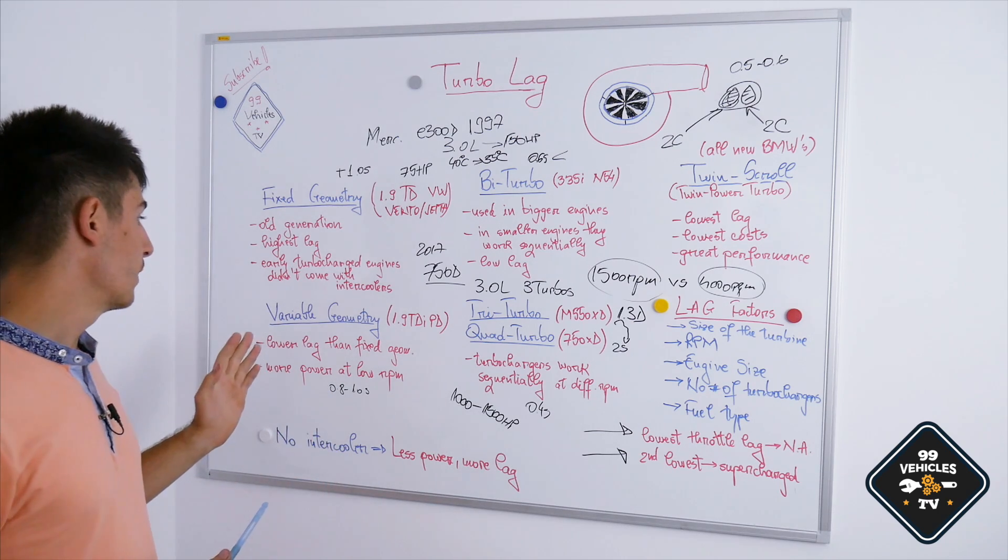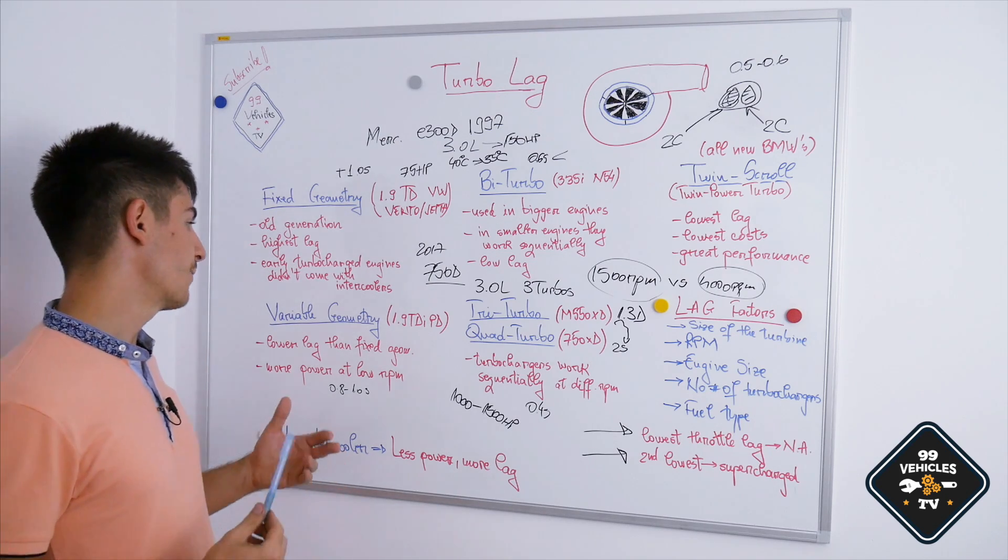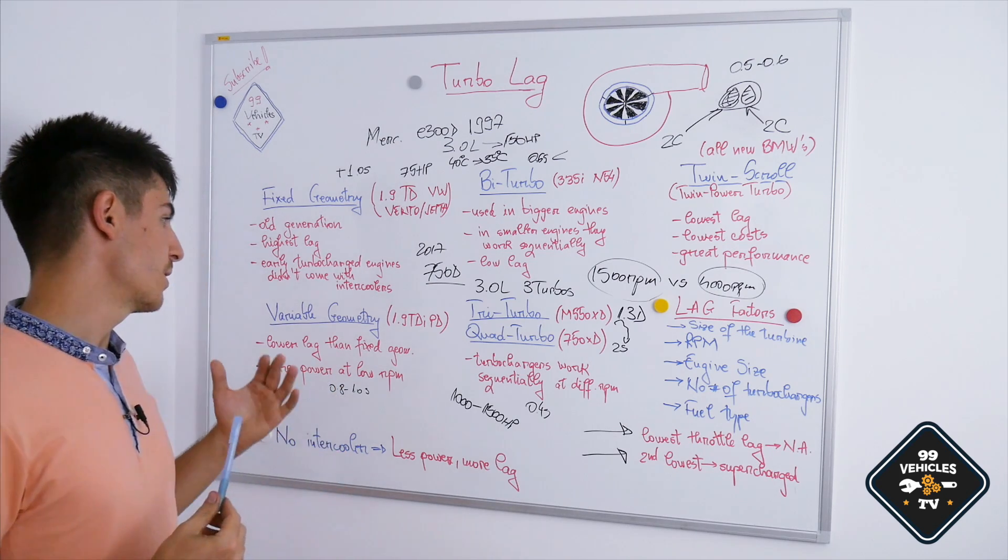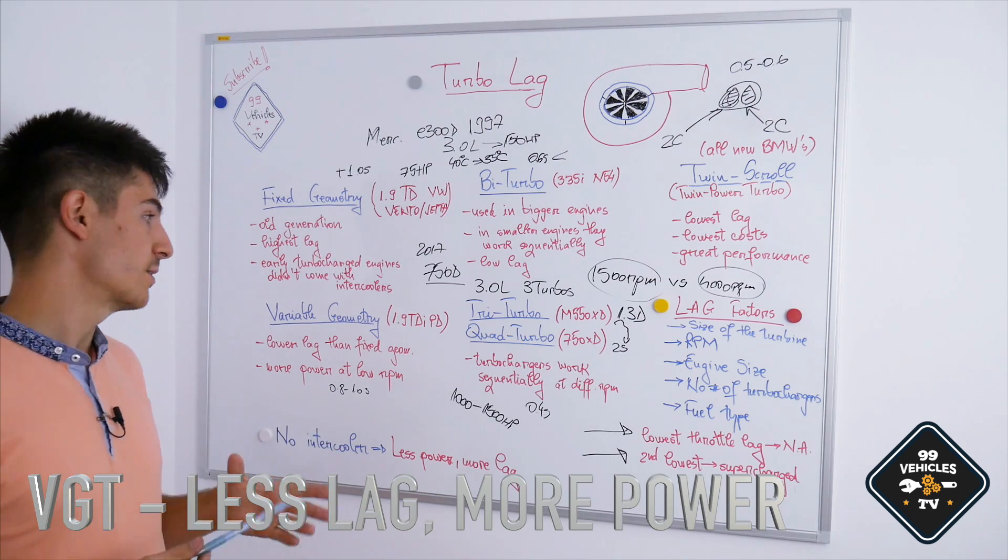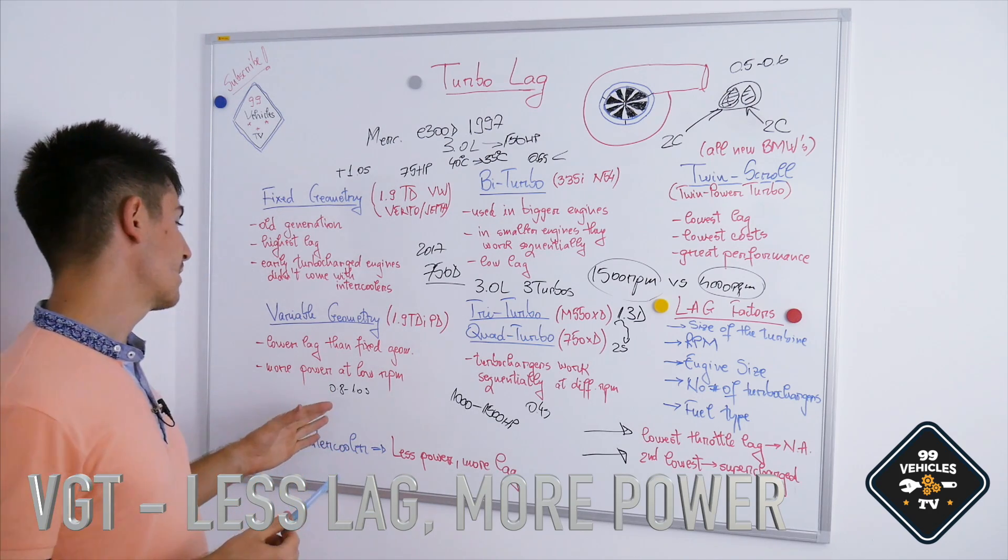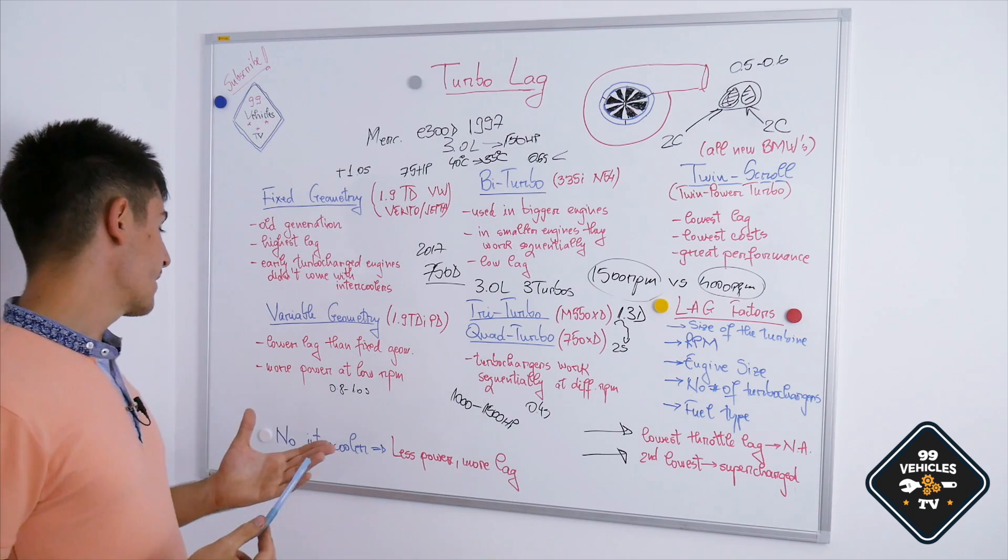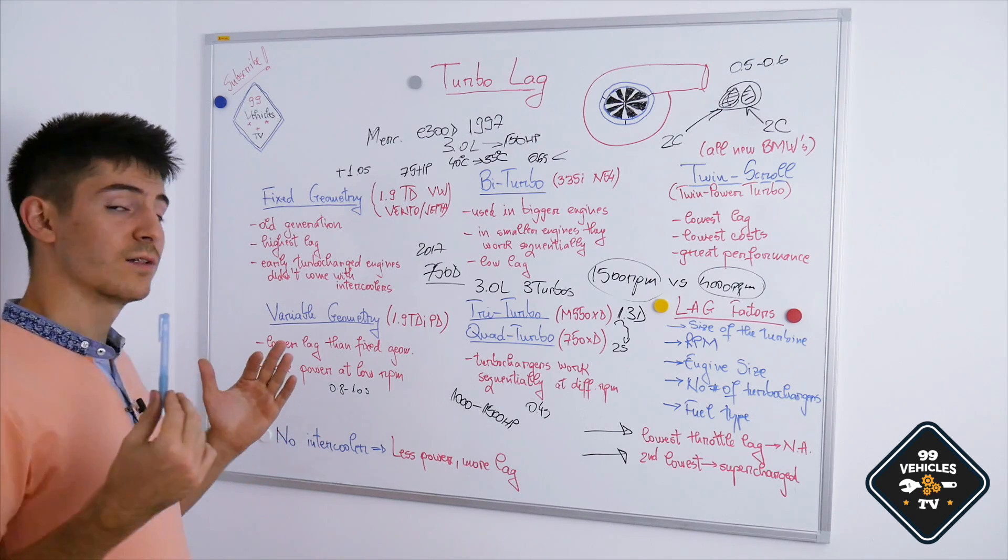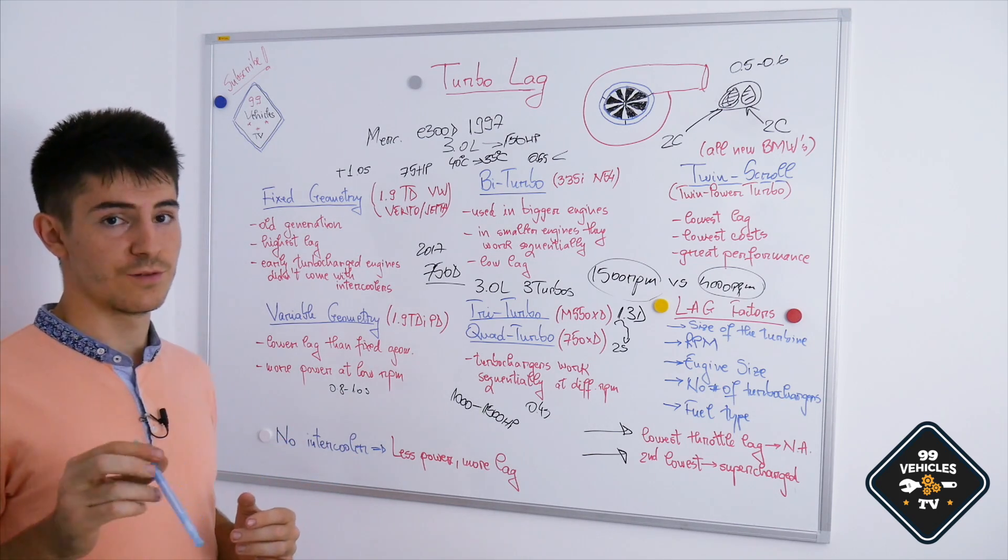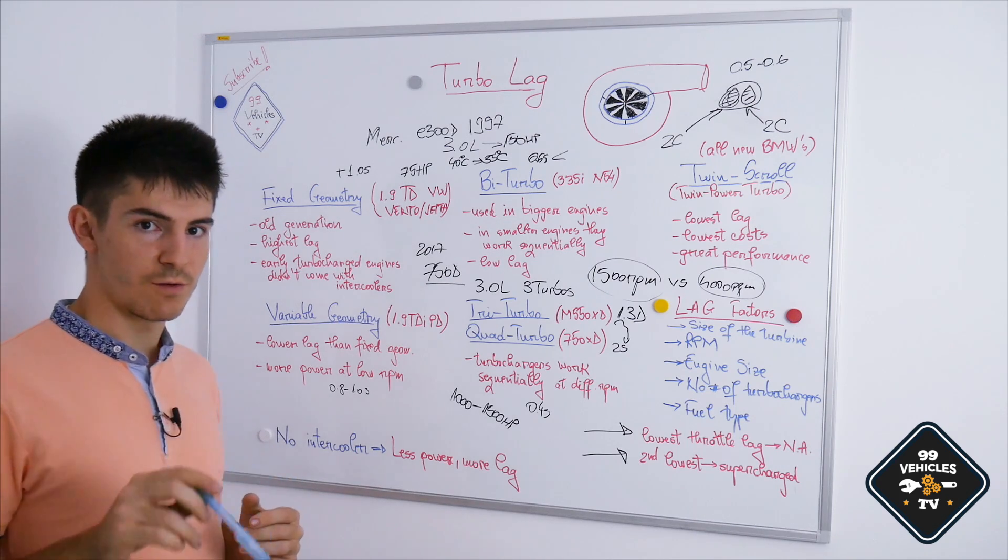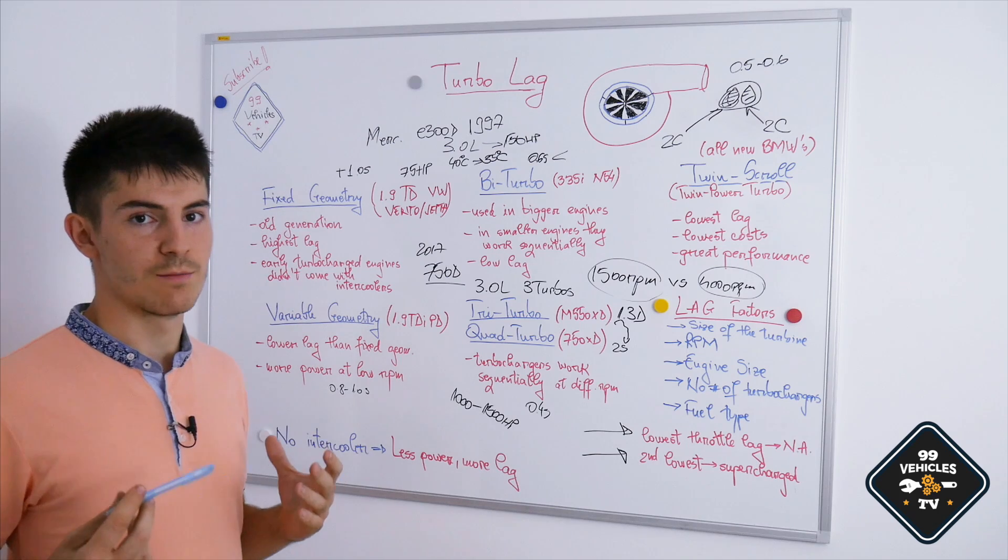After that, we can see variable geometry turbochargers. My dad actually has a 1.9 TDI turbocharged diesel engine with pump unit injectors. He has a variable geometry system and lag is around 0.8 to 1 second after you floor the acceleration. So lag is lower compared to fixed geometry and you have even more power at low RPM. That was the main purpose of switching from fixed geometry to variable geometry, increasing the power output at the low RPM range.